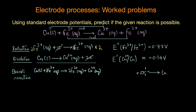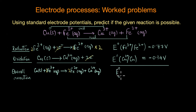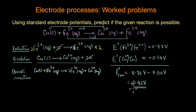The standard reduction potential for the Fe³⁺/Fe²⁺ half reaction is +0.77 V, and the standard oxidation potential for the Cu half reaction is −0.34 V. Note that even though we multiplied the reduction half reaction by two to balance electrons, we do not multiply the electrode potential by that factor — electrode potential is independent of the number of moles. Adding the two potentials gives the overall cell potential: 0.77 − 0.34 = 0.43 V.